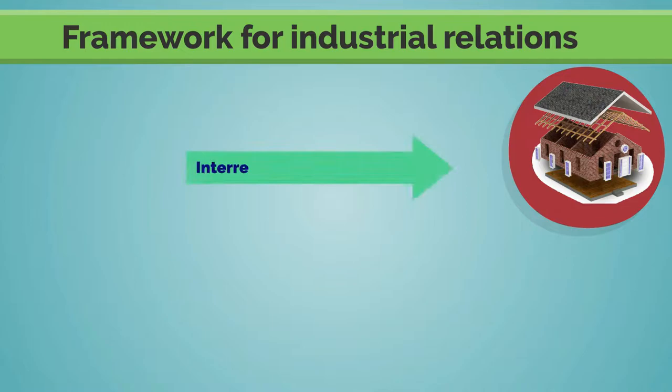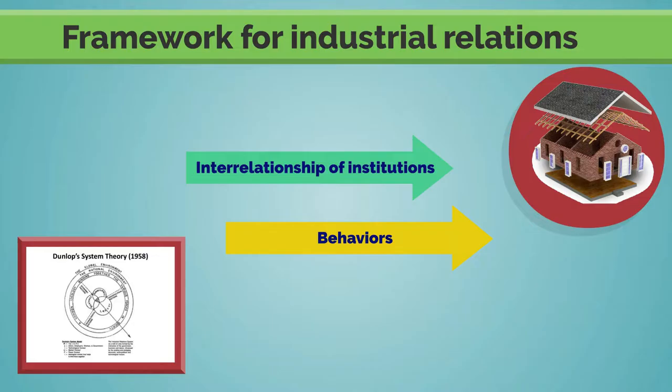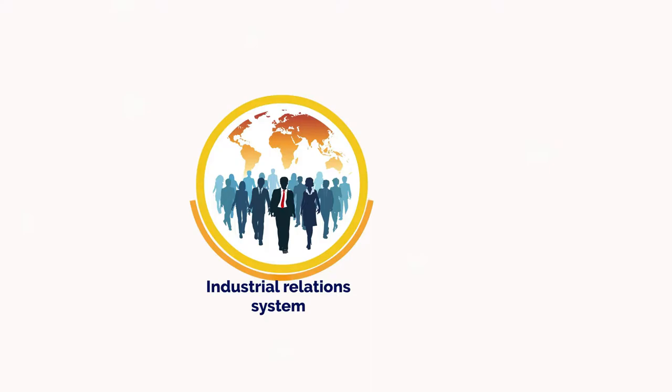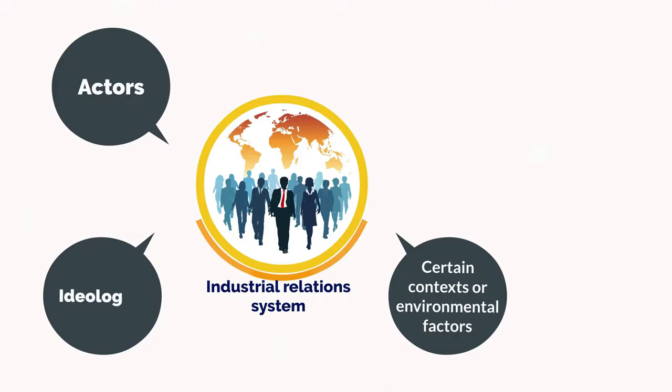Back in the late 1950s, Dunlop suggested that the framework for industrial relations is built on the interrelationship of institutions and behaviors, hence the development of the system theory. According to Dunlop, the industrial relations system at any one time comprises actors, certain contexts or environmental factors, ideologies that bind the system together, and a web of rules created to govern the actors at work.